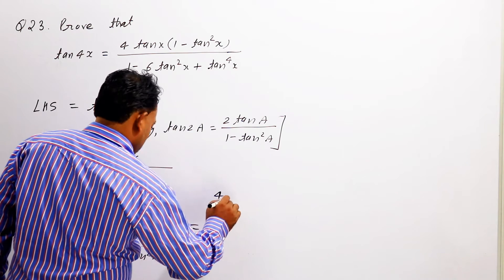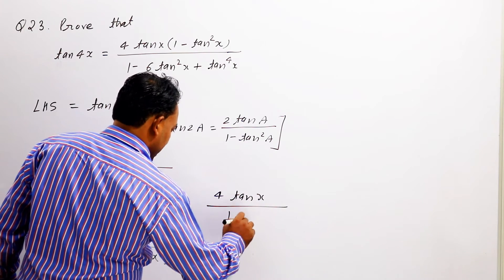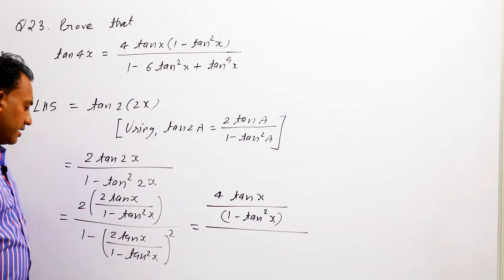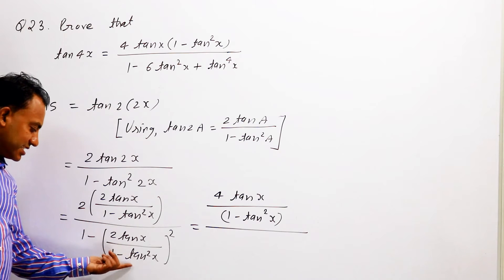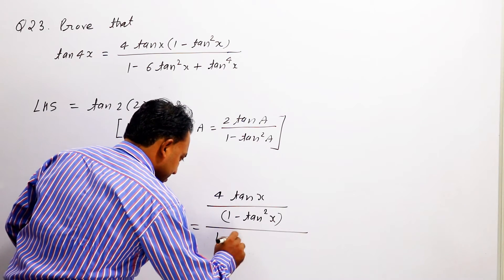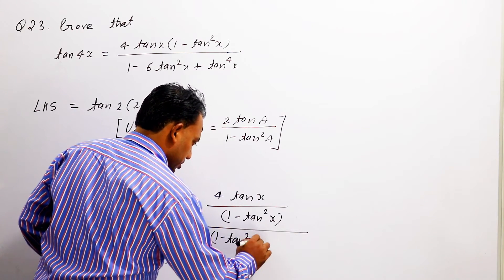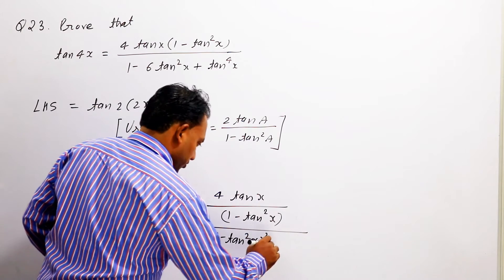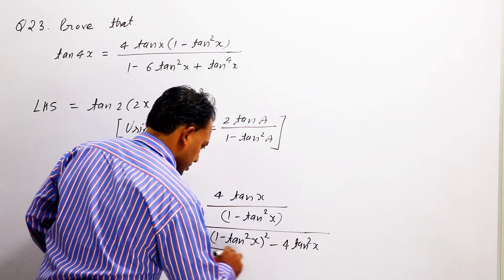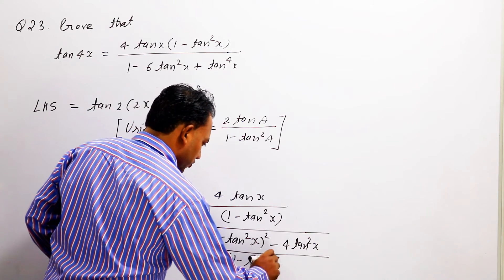इसे ऐसे लिख पाएंगे: 4 tan x upon (1 minus tan² x) upon 1 minus (2 tan x upon 1 minus tan² x) की whole power 2, minus 4 tan² x upon (1 minus tan² x) की whole power 2.